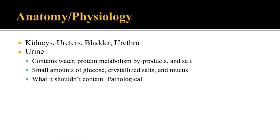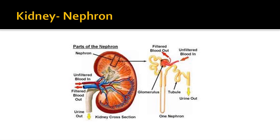Large amounts of glucose in the urine would indicate that there's an issue going on. This system contributes to homeostasis through hormonal and osmotic balance via fluid regulation. The kidneys also help to regulate red blood cell production and calcium levels.